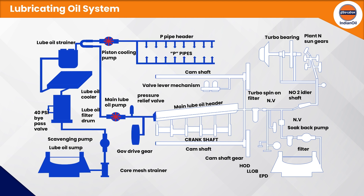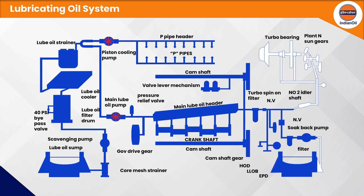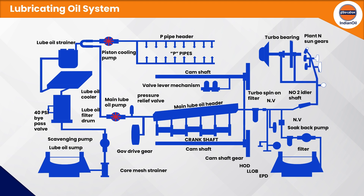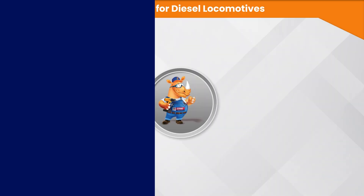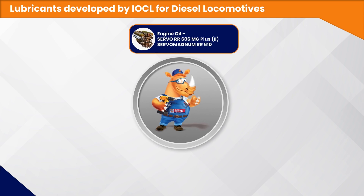The turbo soak-back or turbo loop system ensures lubrication of the turbocharger prior to engine start and removes residual heat from the turbo after the engine is shut down. A separate electrically operated turbo soak-back pump draws oil from the oil sump, feeds it through a soak-back filter, and delivers it to the turbo.